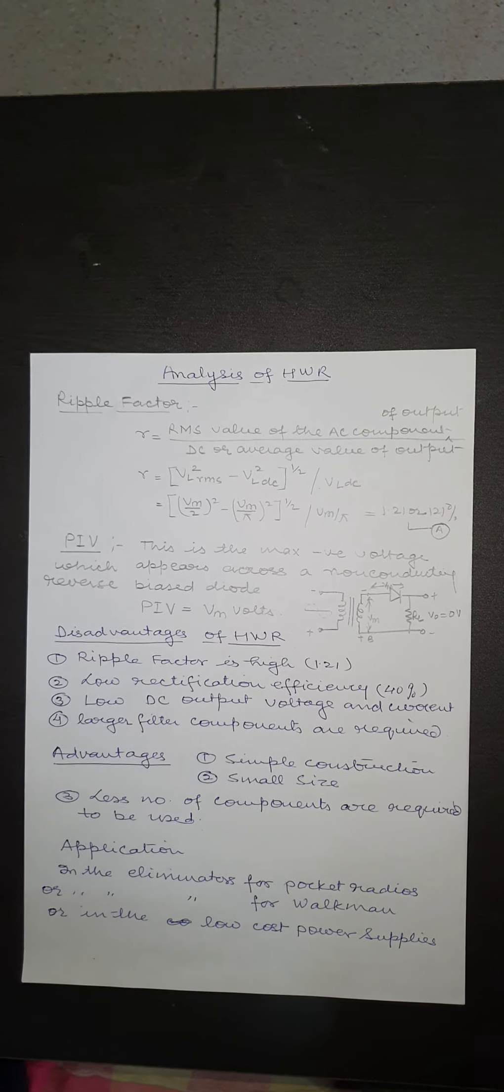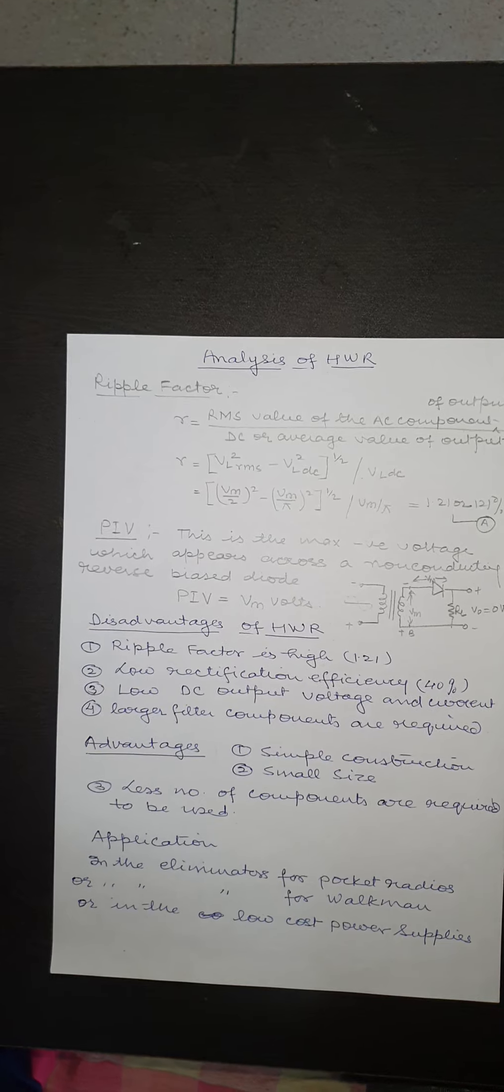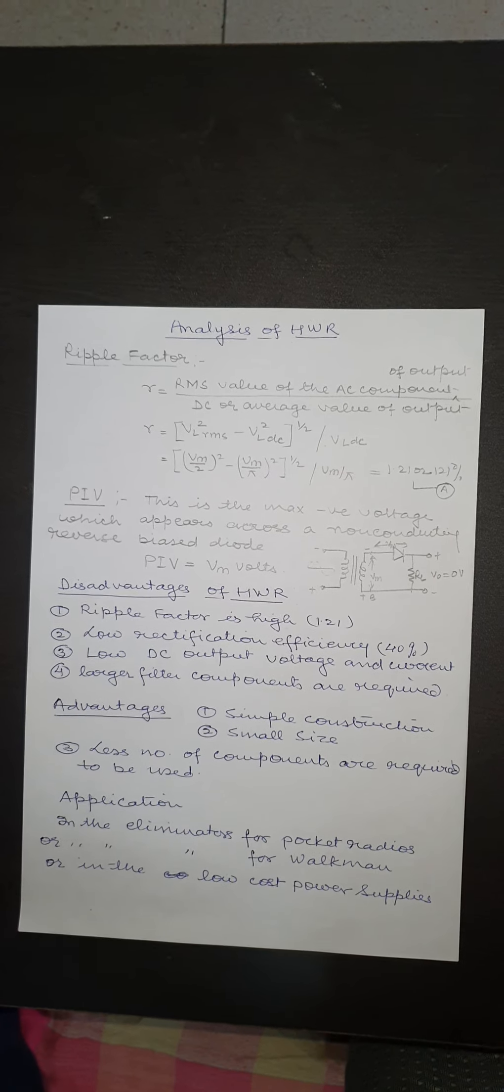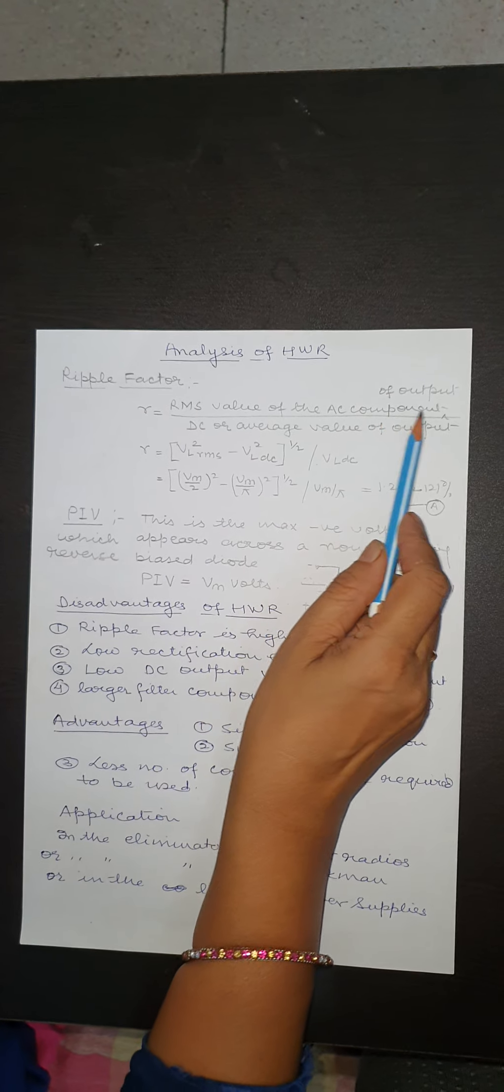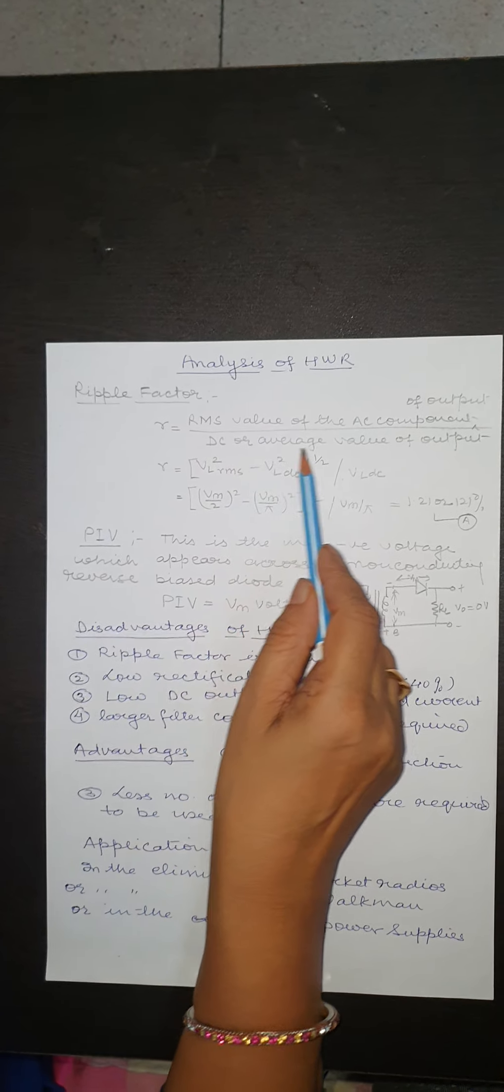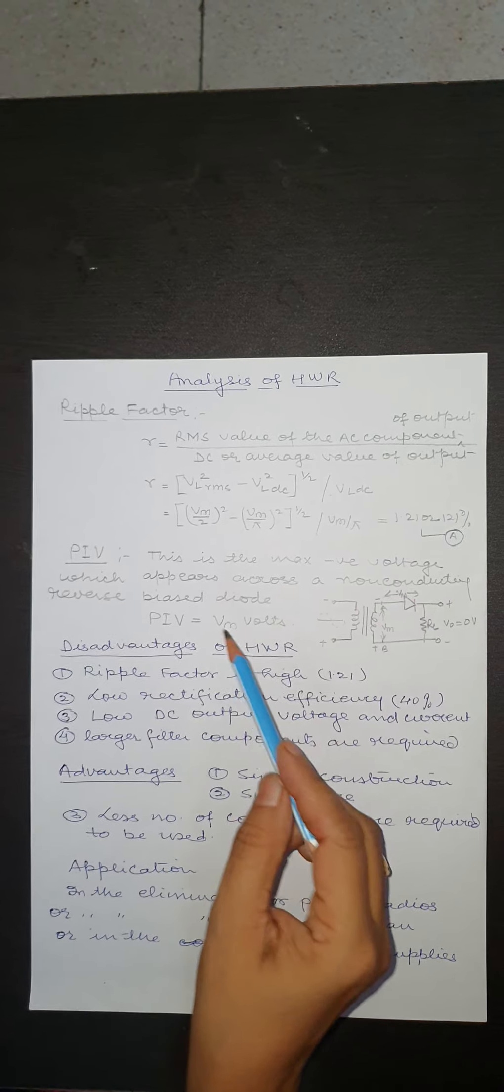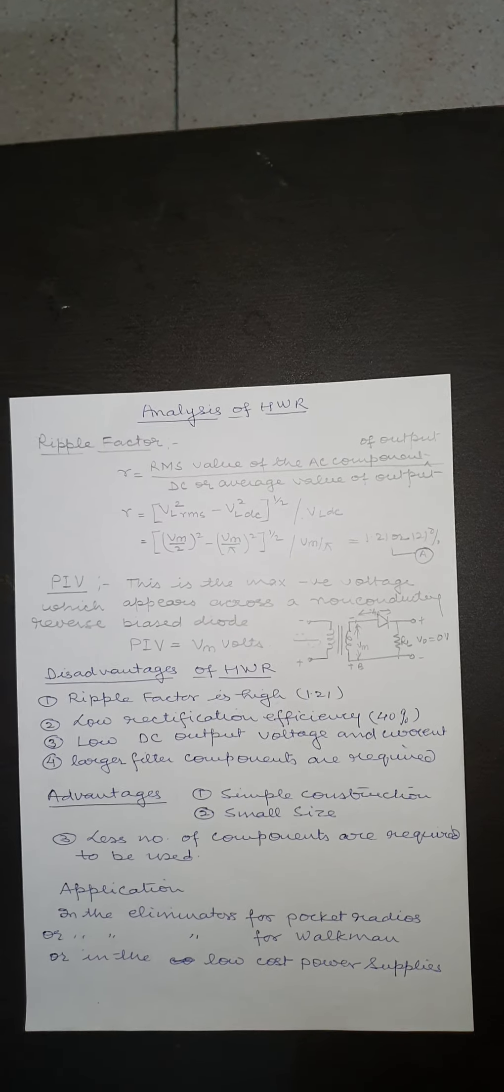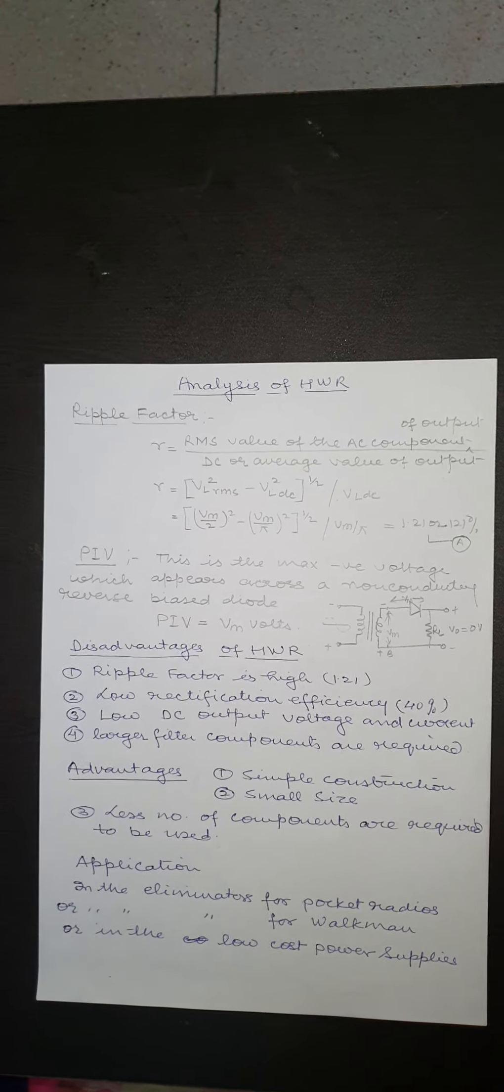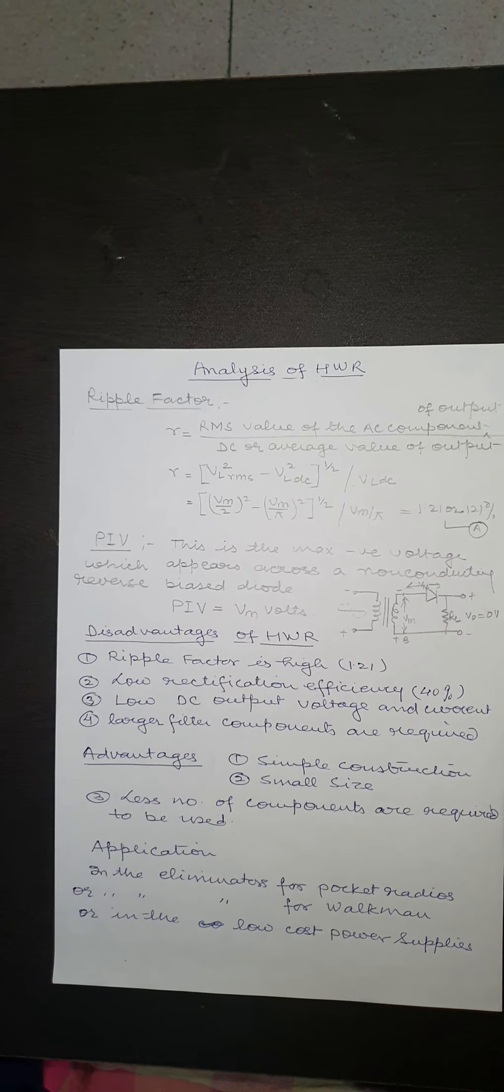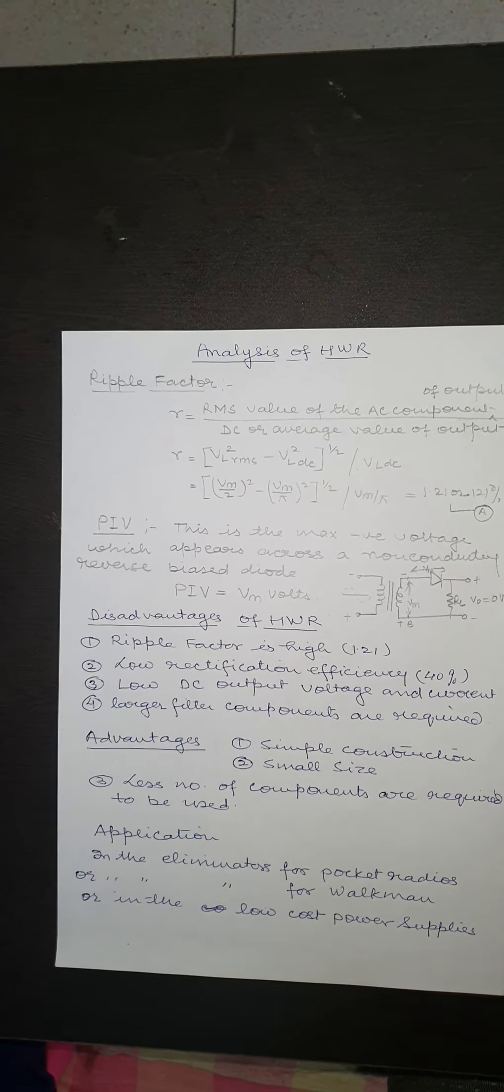Next is ripple factor. Ripple factor is given by RMS value of AC component of output divided by DC or average value of output. Ideally, the AC component of output should be zero. It means that ideal value of ripple factor should be zero and practically it should be as small as possible.